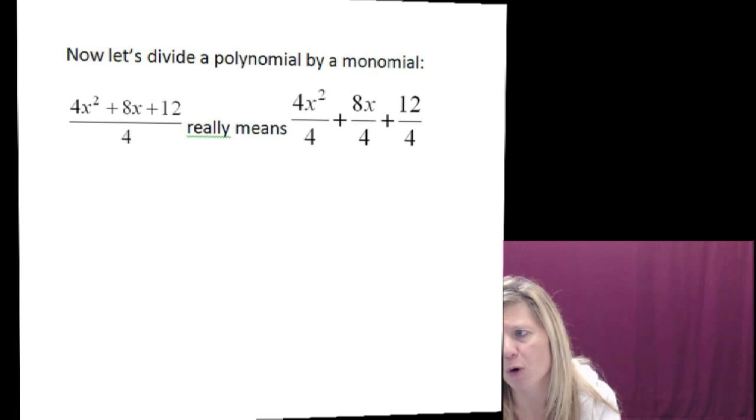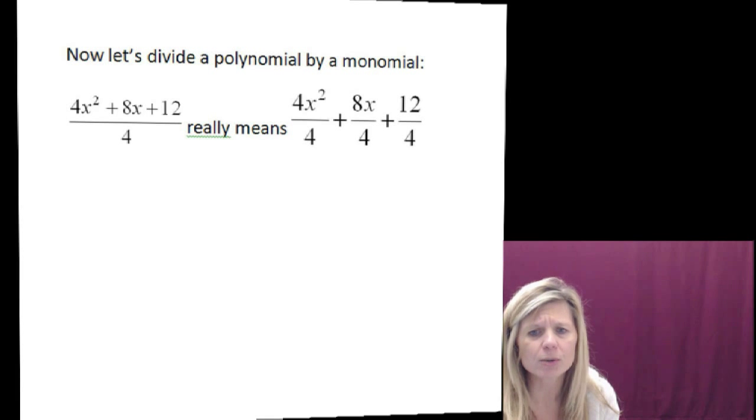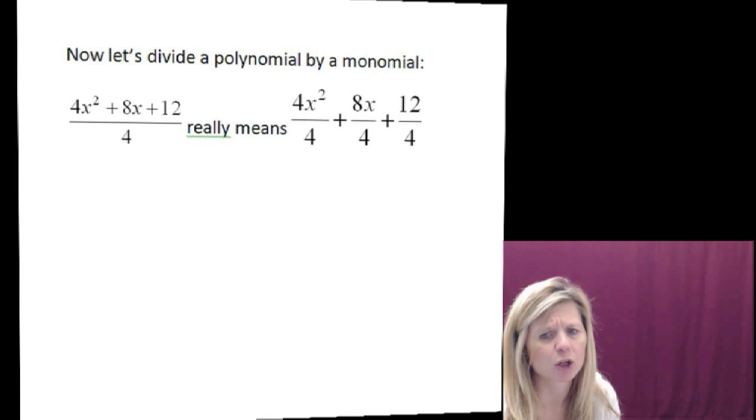So what we're really doing is we're dividing 4x squared by 4, we would get 1x squared. We would divide 8x by 4 and get 2x. And then we would divide 12 by 4 and get 3. So all we're doing today is taking a polynomial expression and breaking it up into smaller terms.